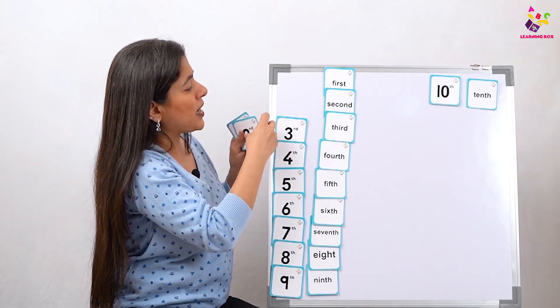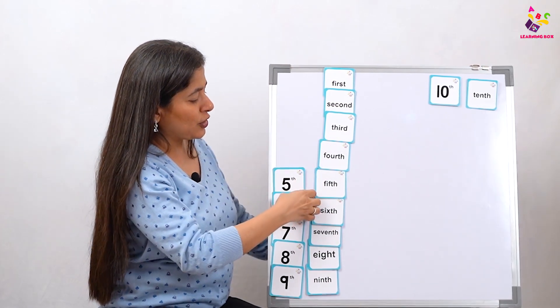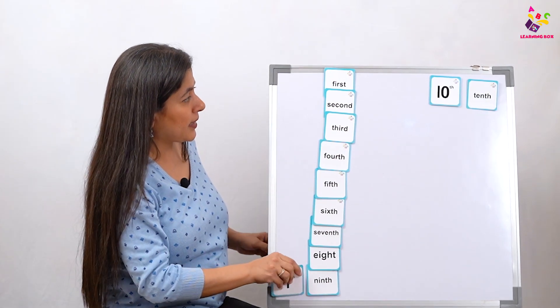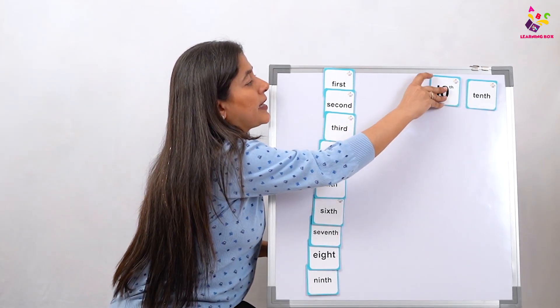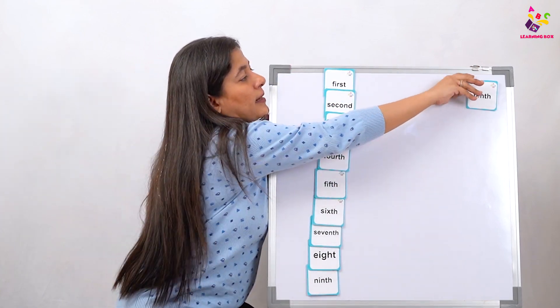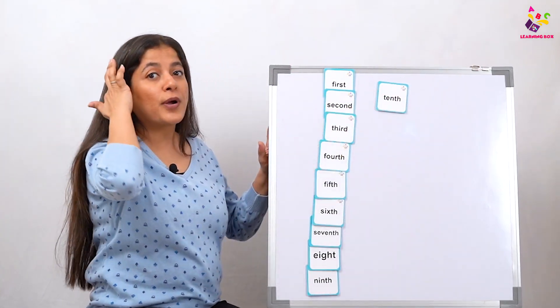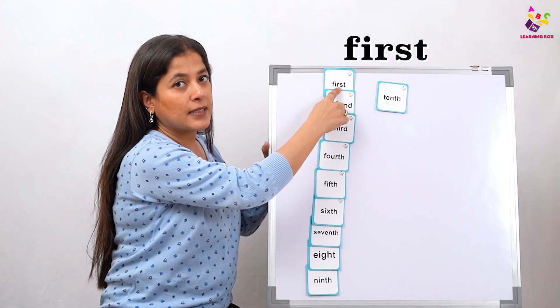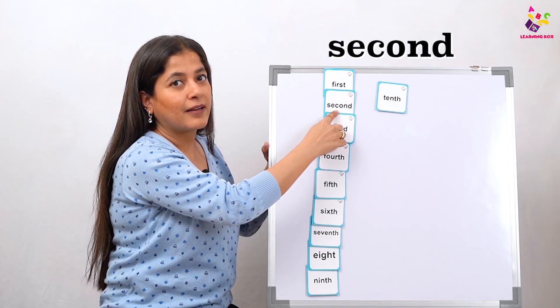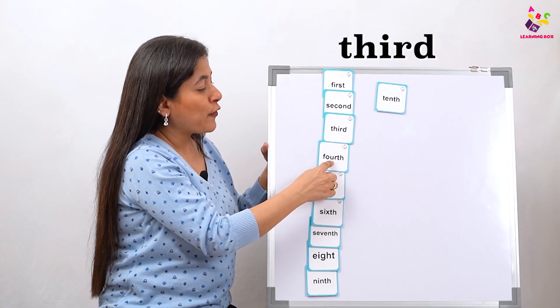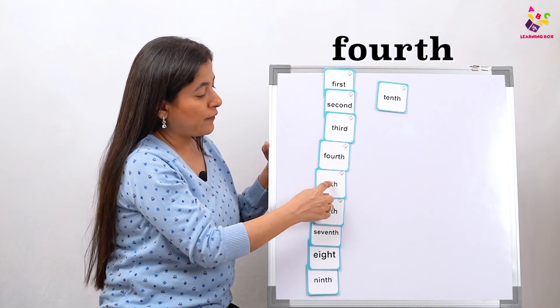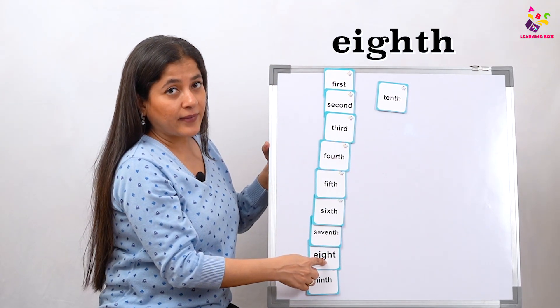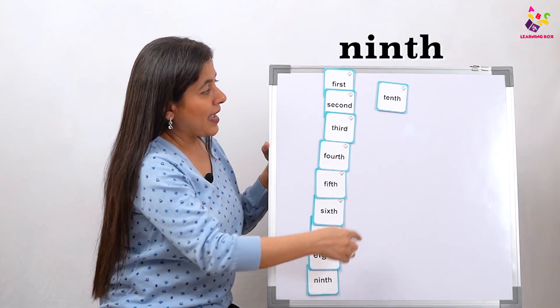Now I am going to remove the numbers and I want you all to just read the ordinal number words. Let's start. First, second, third, fourth, fifth, sixth, seventh, eighth, ninth, and tenth.